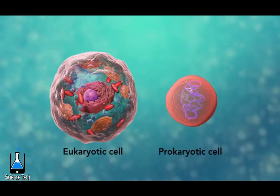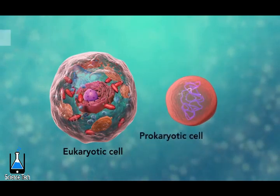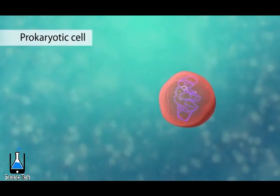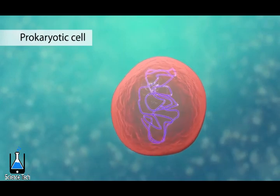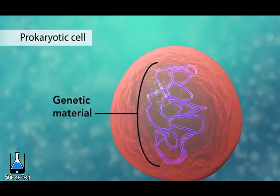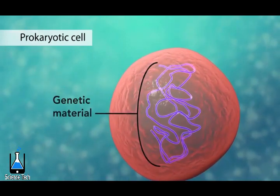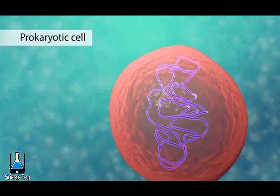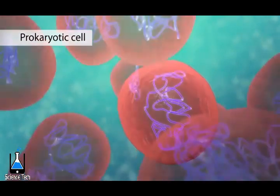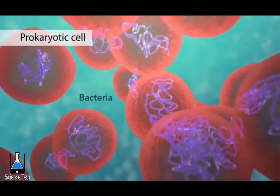The second category is prokaryotic cells. They don't have a nucleus or membrane-enclosed organelles. They do have genetic material, but it's not contained within a nucleus. Prokaryotic cells are always one-celled or unicellular organisms, such as bacteria.